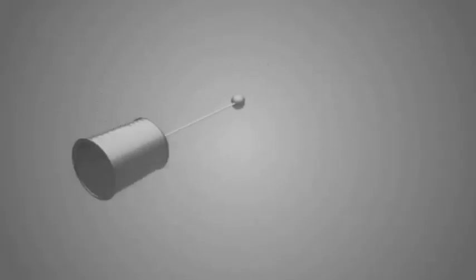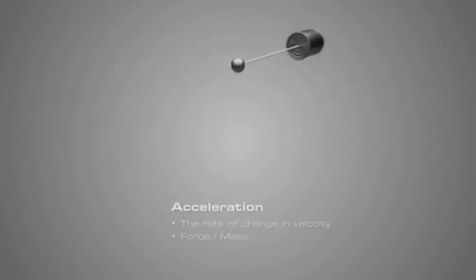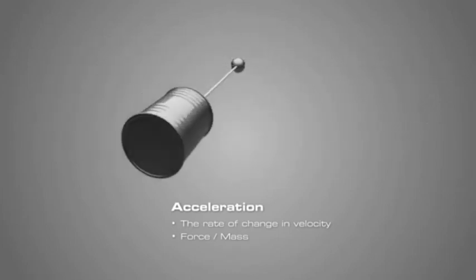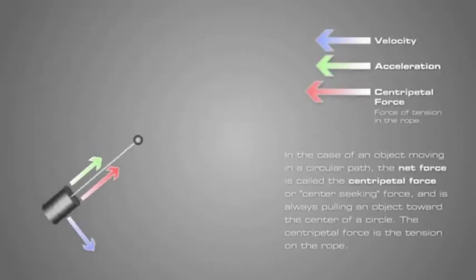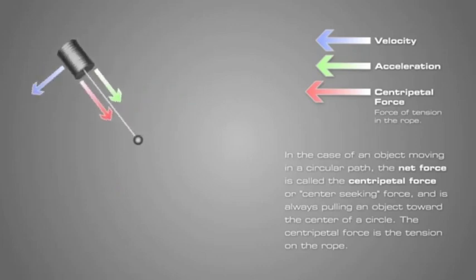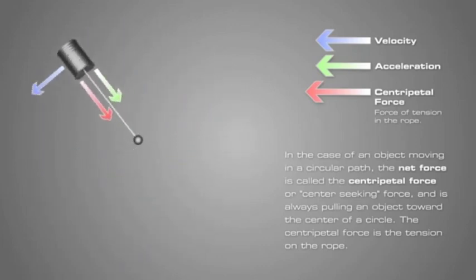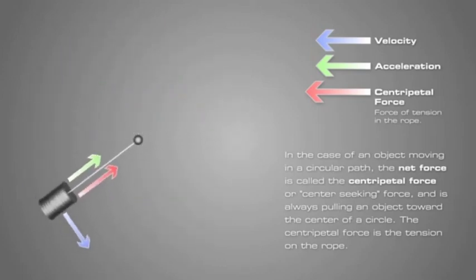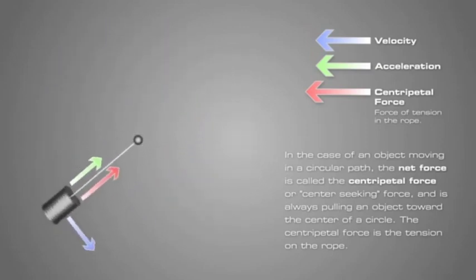Imagine swinging a rope around in a circle with a can attached to the end. The can is in a constant state of acceleration since its velocity is constantly changing due to its circular path. Acceleration of the can is caused by a net force acting on the object. In the case of an object moving in a circular path, the net force is called centripetal force, or center-seeking force, and is always pulling an object toward the center of a circle. Without this force, an object will continue moving in a straight line.